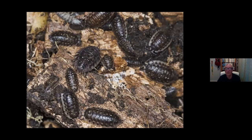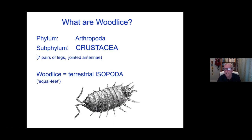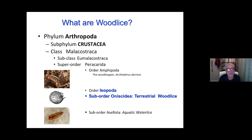Quick recap — that's woodlice. They're crustaceans, seven pairs of legs, jointed antennae. Isopoda means they have equal feet, so very little differentiation between the feet — just a little bit of sexual dimorphism occasionally in some structures of the legs. They are very different to most of the crustacea, but they are little land shrimps. We are just focusing on the terrestrial woodlice, which belong to the suborder Oniscidia.